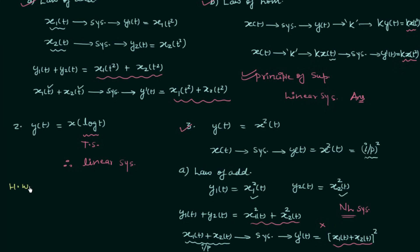There is one homework problem: y(t) = x(3t³). You need to determine whether the system is linear or nonlinear. Once you have your answer, post it in the comment section. That concludes this lecture.